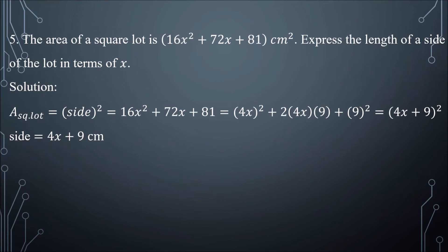Number 5: the area of a square lot is 16x squared plus 72x plus 81 cm squared. Express the length of a side of the lot in terms of x. A square lot has an area equal to side squared, which is equal to 16x squared plus 72x plus 81.